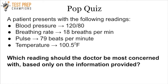Now it's time for a pop quiz. A patient presents with the following readings: a blood pressure of 120 over 80, a breathing rate of 18 breaths per minute, a pulse of 79 beats per minute, and a temperature of 100.5 degrees Fahrenheit. Which reading should the doctor be most concerned with based only on this information? Pause the video, try to figure it out, and then we'll go over it.